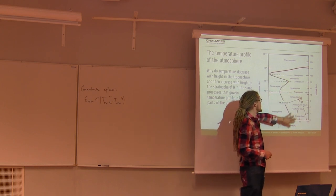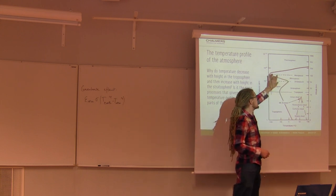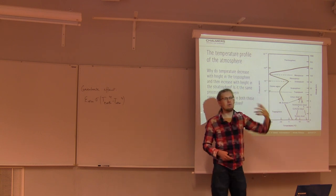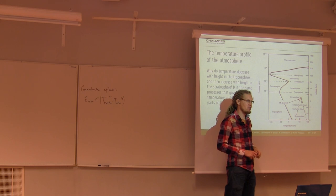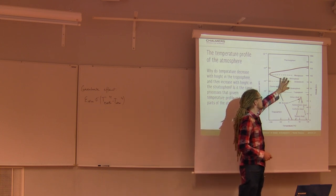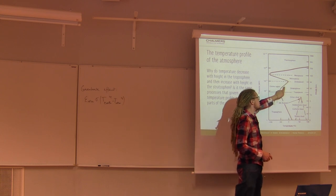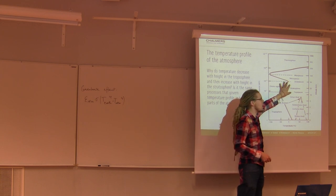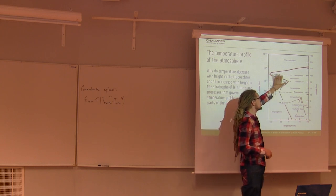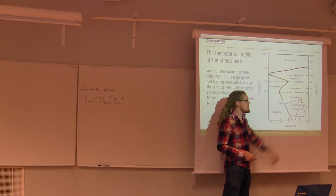In the mesosphere, more or less the same processes work again — pressure decreases with height. One reason the curve is steeper there is you don't have very much water vapor, so you don't have the counteracting effect of condensing water that you have in the troposphere. Also, the pressure is so low that there aren't enough molecules to absorb the incoming short-wave radiation the way the stratosphere does.